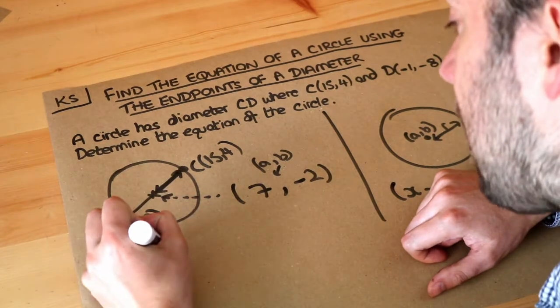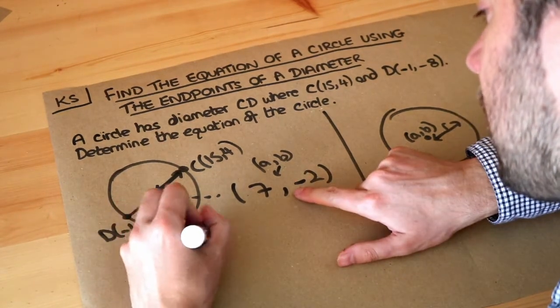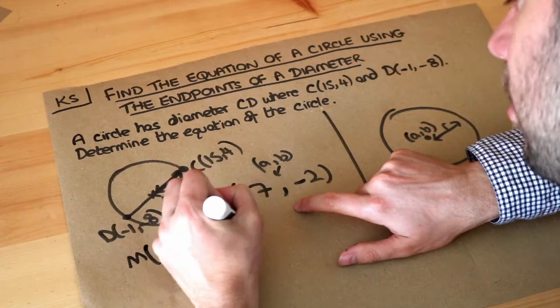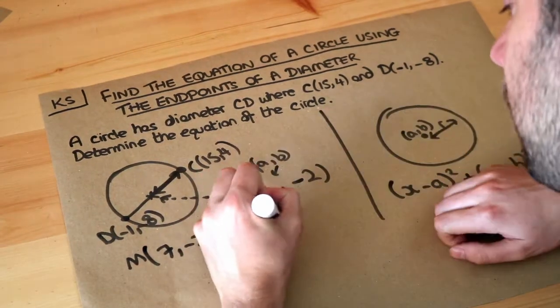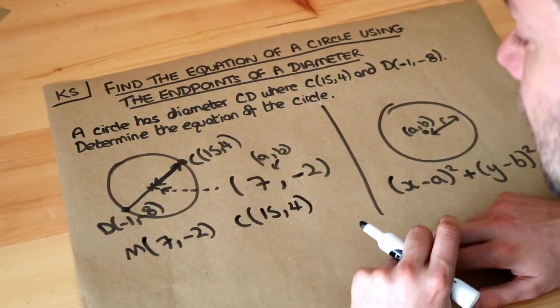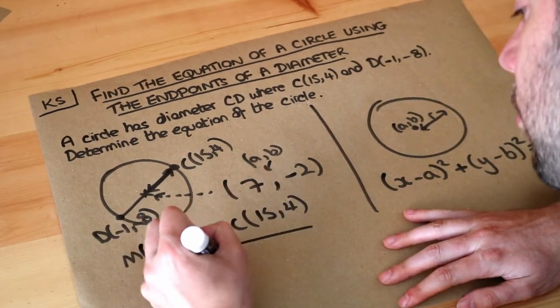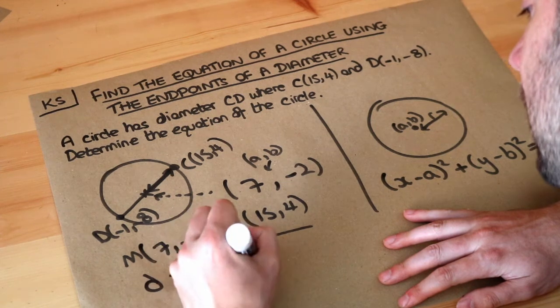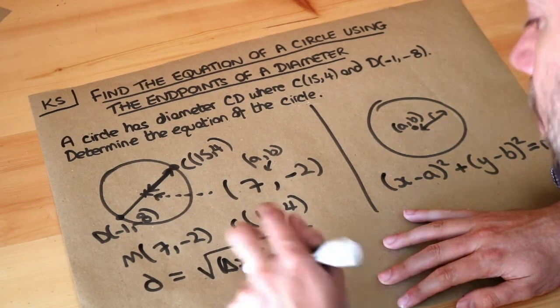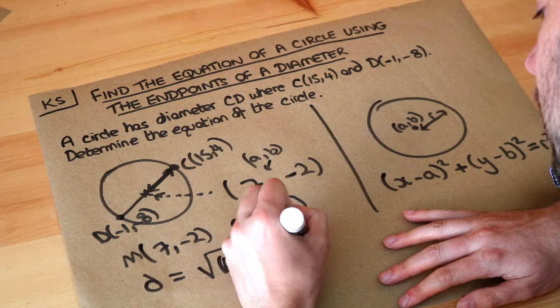So we're going to use (7,-2), the center, let's call it M, and we're going to use this point here, (15,4). And do you remember, to find the distance between two points, we use this formula. The distance between two points is the square root of the change in x squared - the delta there means change - plus the change in y squared.